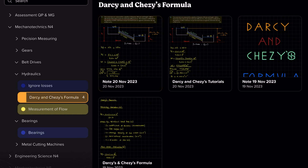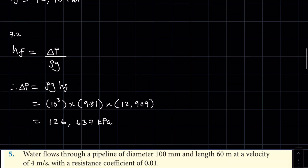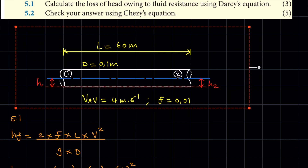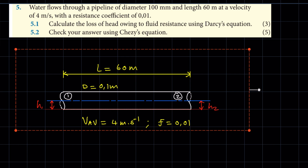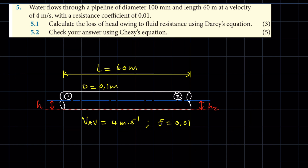Now the diagram for this I've already drawn — we're simply going to copy and paste. So the diagram shows a horizontal pipe. The pipe length is 60 metres, the pipe diameter is 0.1 metre. They also give us the velocity, so the average velocity is 4 metres per second. Remember, if a pipe has a constant diameter, the velocity at entry and exit will be the same — hence us calling it the average velocity. The coefficient of friction is 0.01, and for this pipe we know that H1 and H2 are equal.